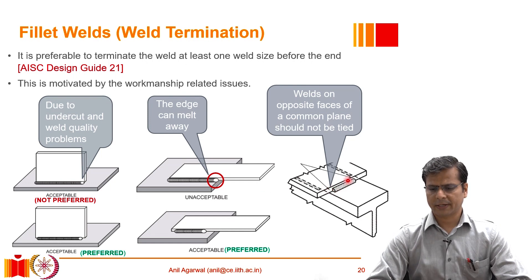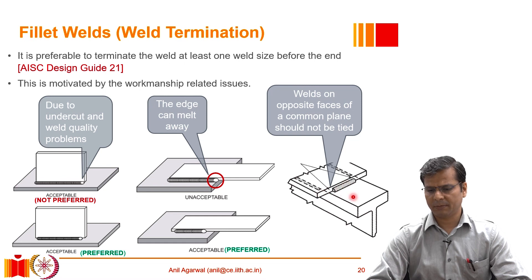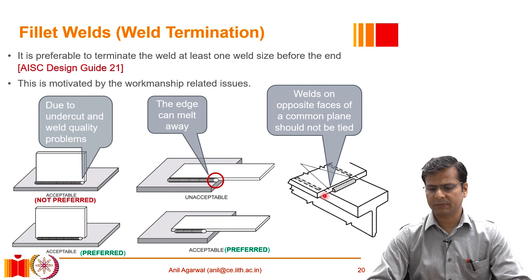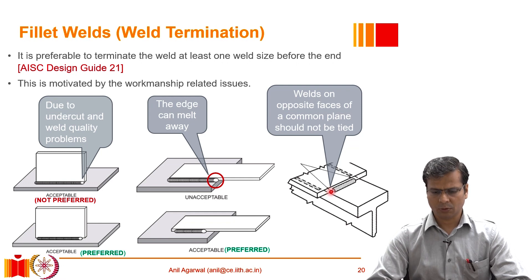There can also be a situation where fillet welds must be provided on opposite faces of a common plane. For example, two welds — one below the flange and one above the flange — are on opposite sides of the plate. In such a situation it is better not to make them continuous; it is better to terminate them separately. The risk is that the sudden change in direction of the weld in two planes simultaneously has a very high likelihood of melting away a large portion of the plate, leaving a weak cross section where failure may begin. These weld termination requirements are mostly governed by workmanship-related issues.